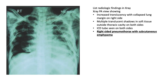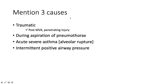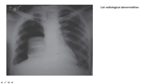Here we see foreign bodies in the chest cavity — two intercostal chest drains. The right lung field is increasingly translucent — this is a right-sided pneumothorax with subcutaneous emphysema. There is air in the soft tissues bilaterally. The most common cause is traumatic (penetrating injury to the thorax or post-MVA); it can also occur during pneumothorax aspiration, in acute severe asthma with alveolar rupture, or due to intermittent positive airway pressure and barotrauma.